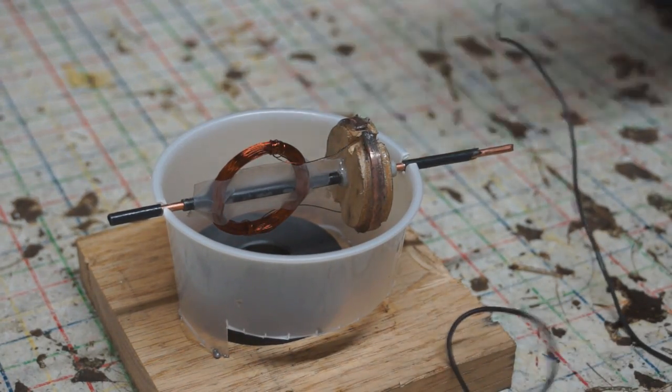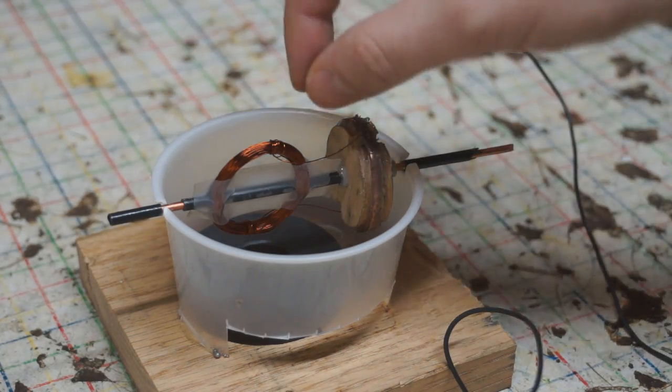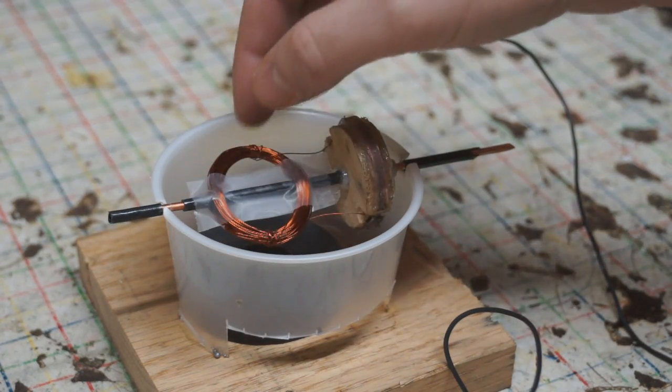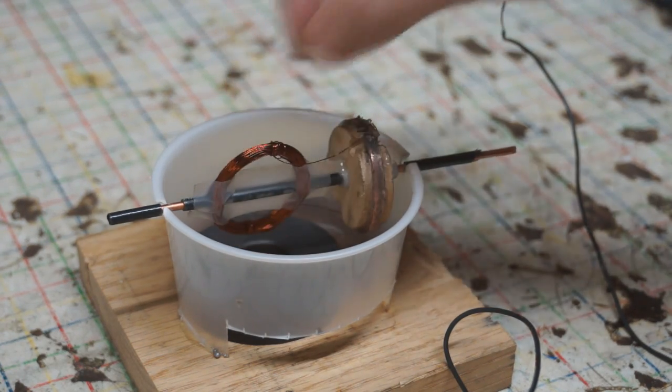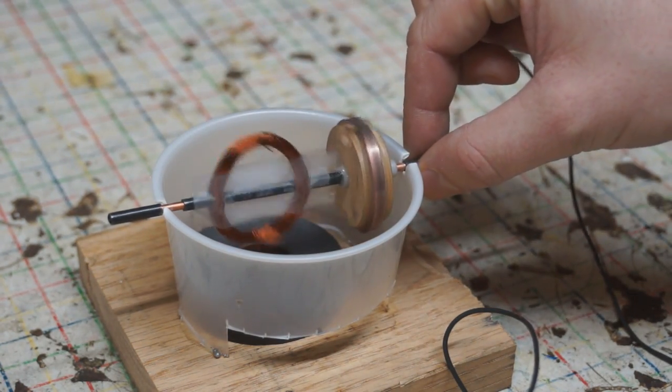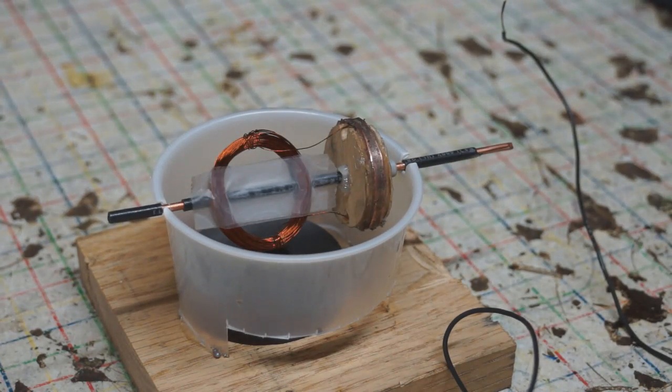That's because the magnetic field in the coil keeps changing directions and the coil gets pulled one way and then one sixtieth of a second later it gets pulled the other way and it doesn't want to spin up like a motor should.